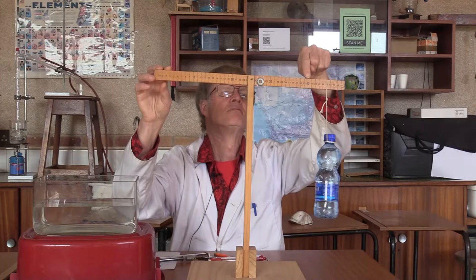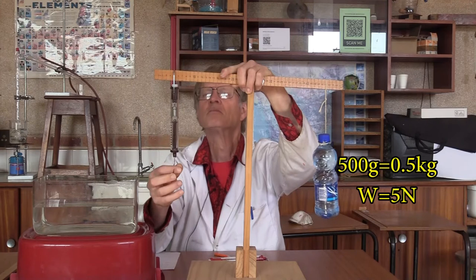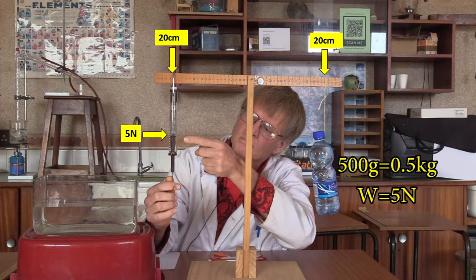We place it 5, 10, 15, 20 centimeters away from the fulcrum. And we apply a force on the other side. And we get the stick to balance. And when it is, we see it is also 5 newtons. The effort is 5 newtons while the load is 5 newtons.